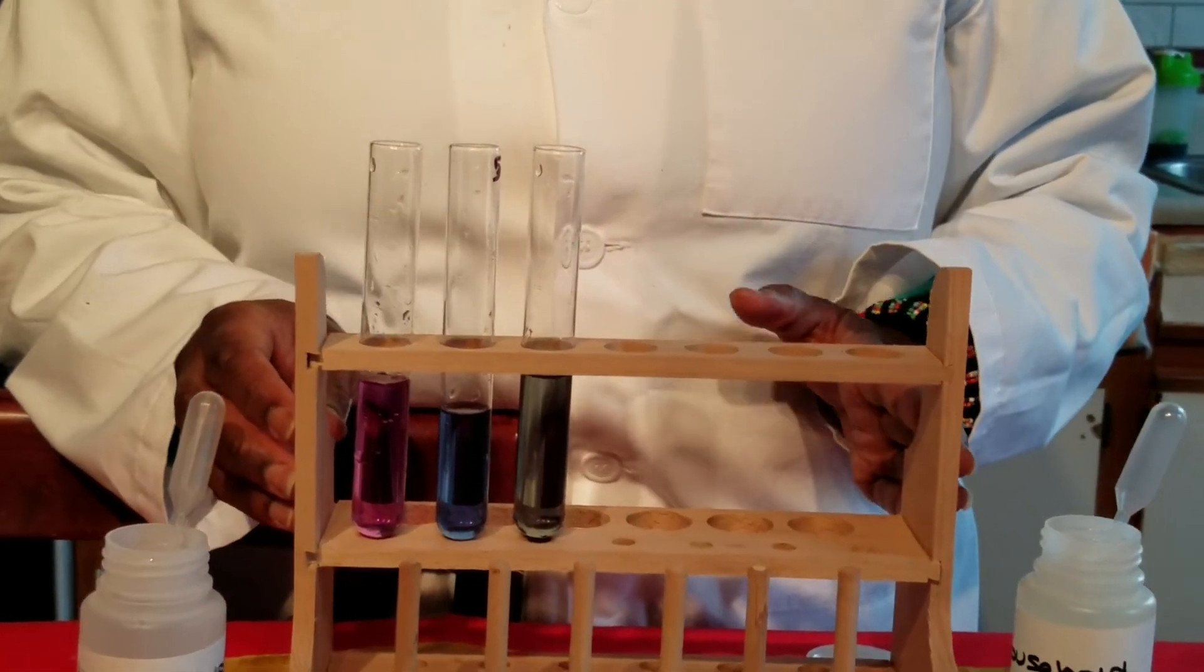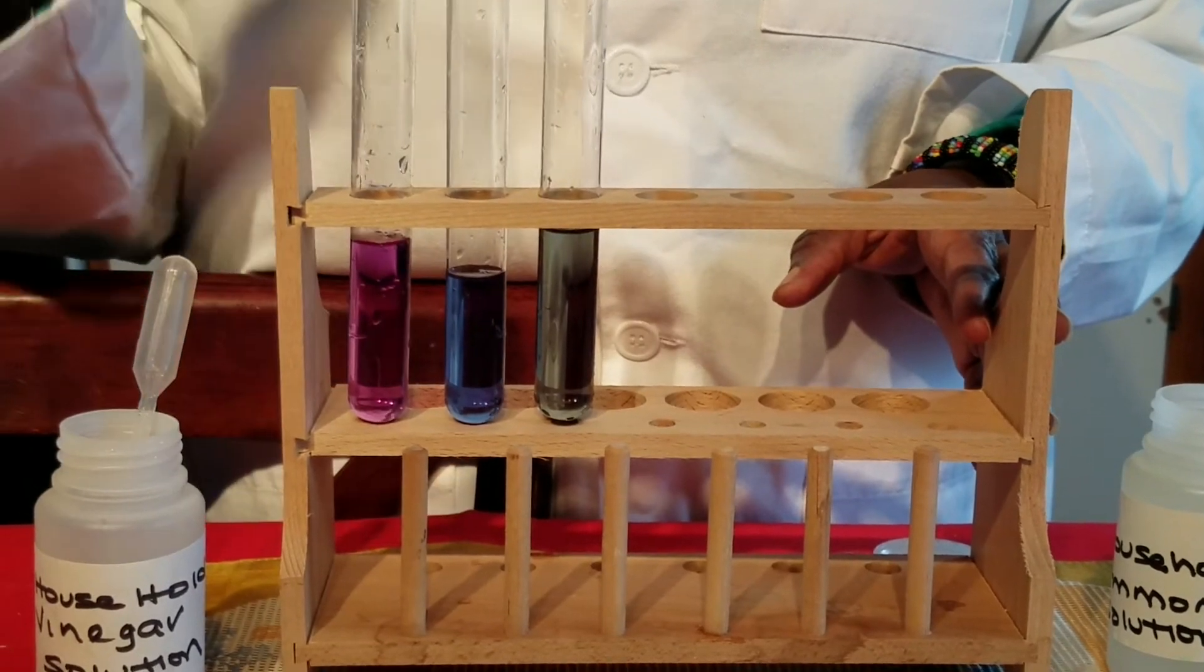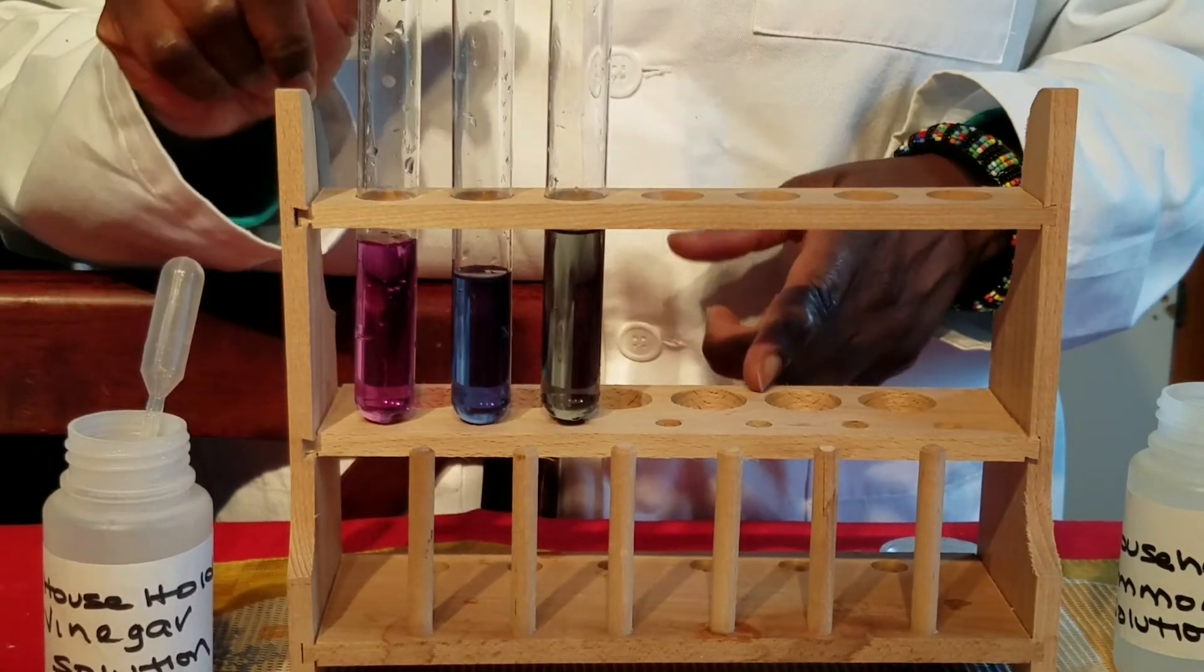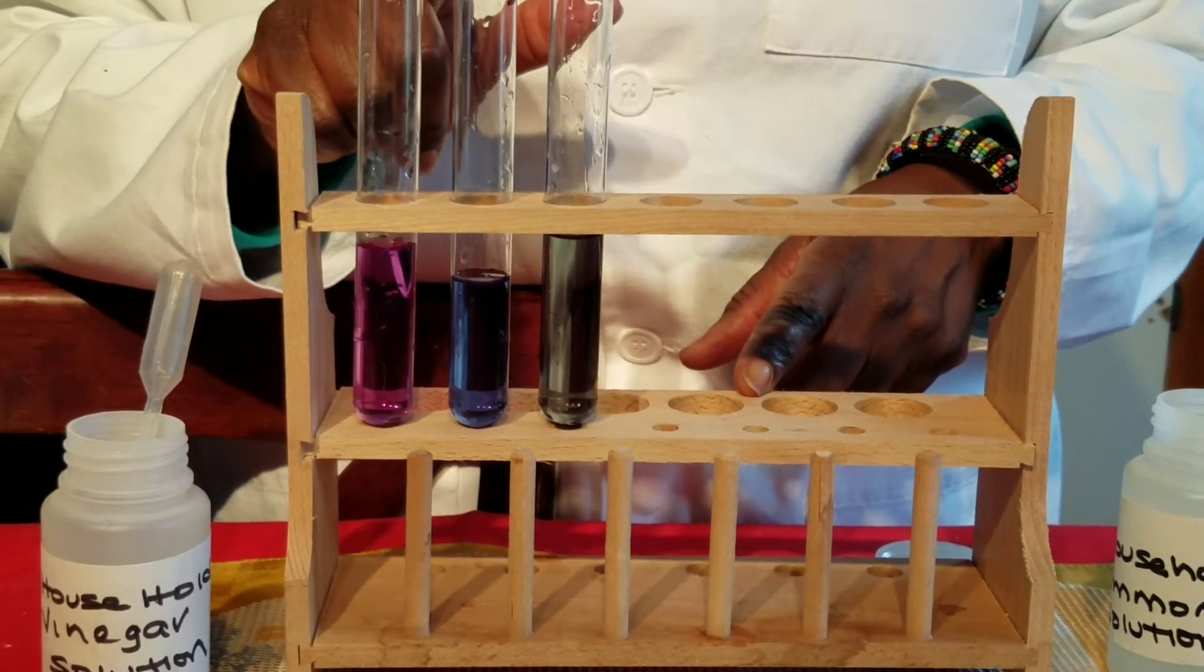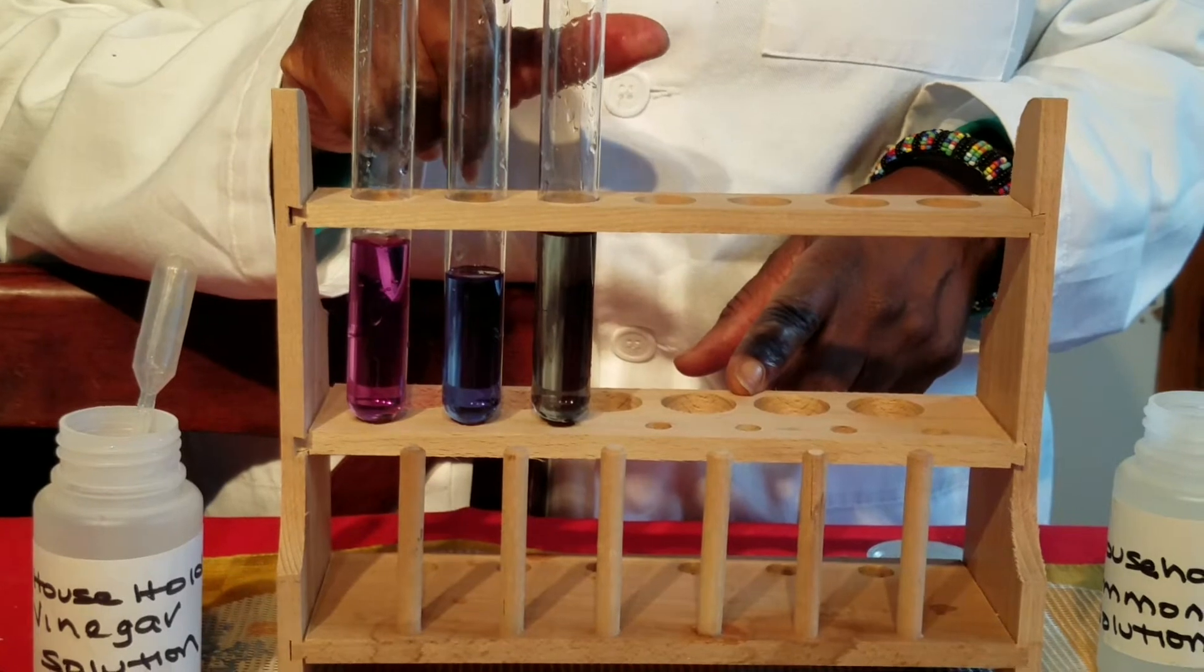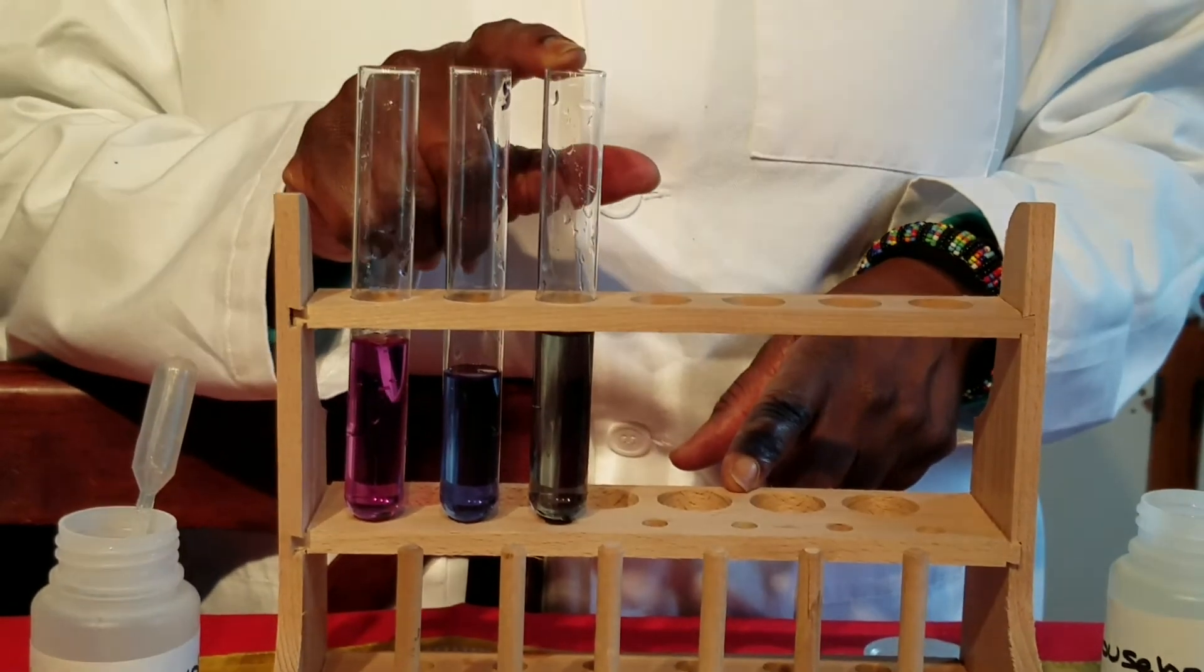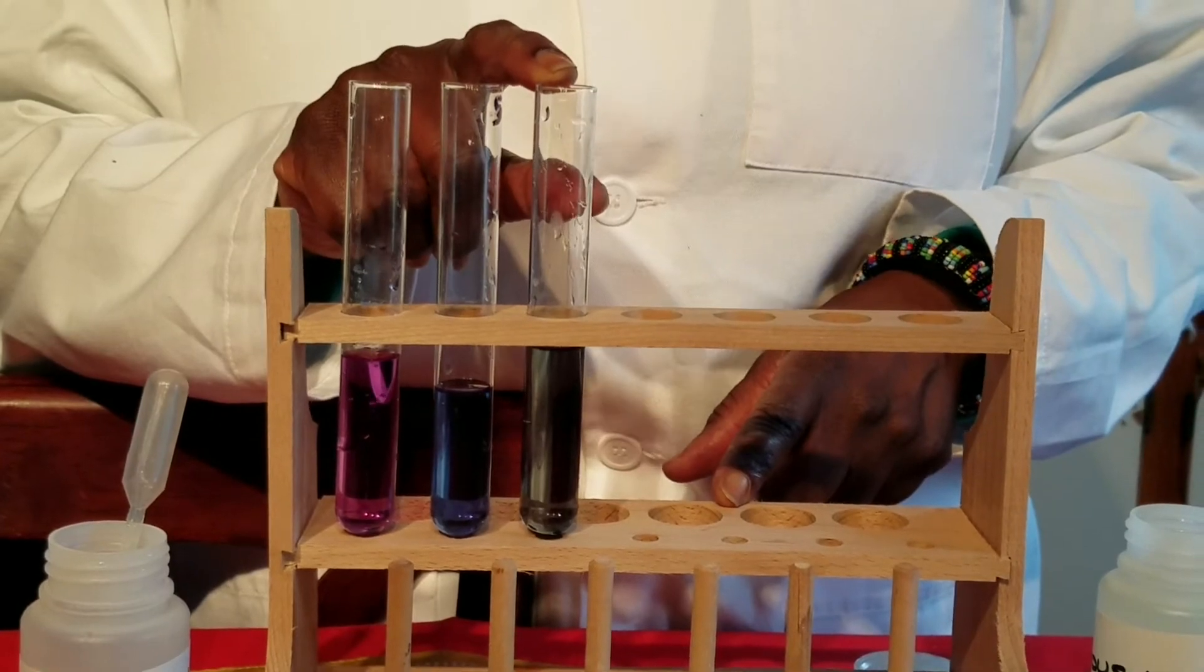And so looking at your observations, you can see that there are color changes. This is if you add acid. This is the control. And this is if you add a base. So by looking at our balanced chemical reaction, we can work on the direction in which it's shifted.